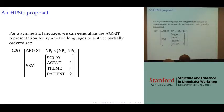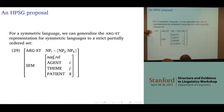Instead of specifying the argument structure as a list — a totally ordered structure — we can specify it as a partially ordered structure. There's no evidence in Moro that the theme outranks the patient or the patient outranks the theme at this level. In Moro, there's simply no evidence for a hierarchical relationship between them. That doesn't break anything else, because there's still going to be a difference between a theme and a patient in the semantics, and as we'll see, these things do have to occur in some order in the syntax.